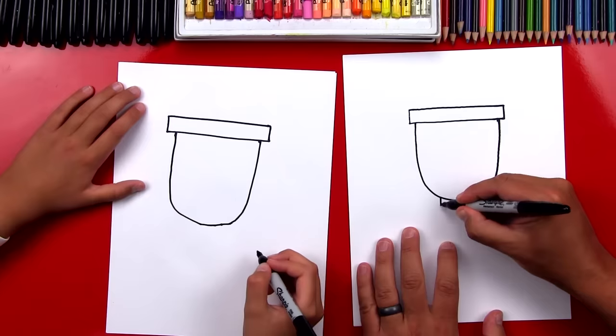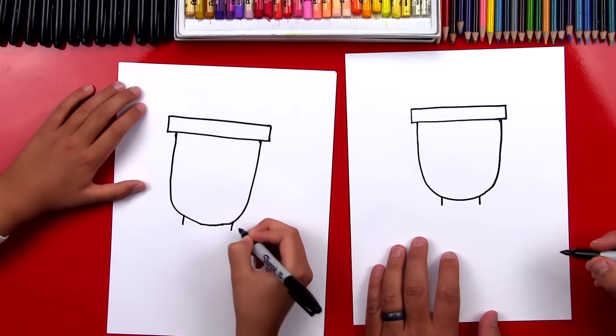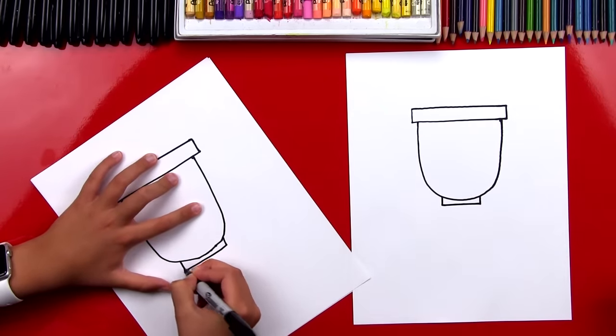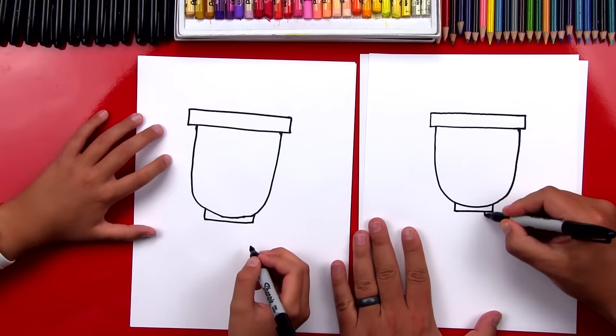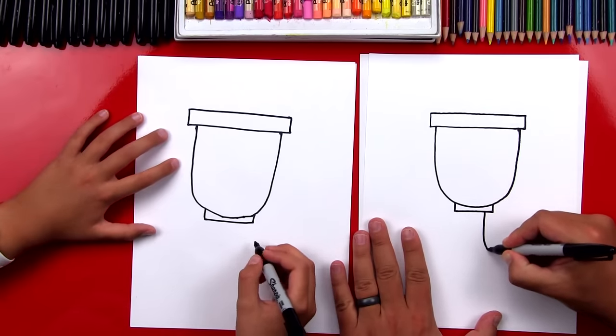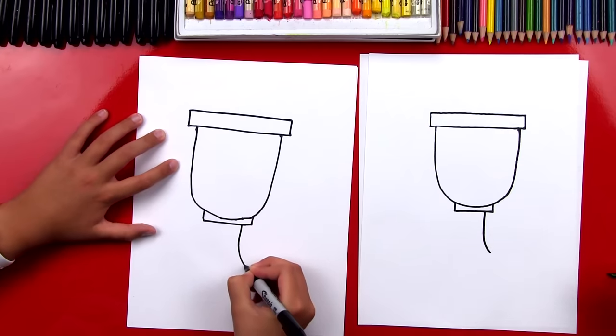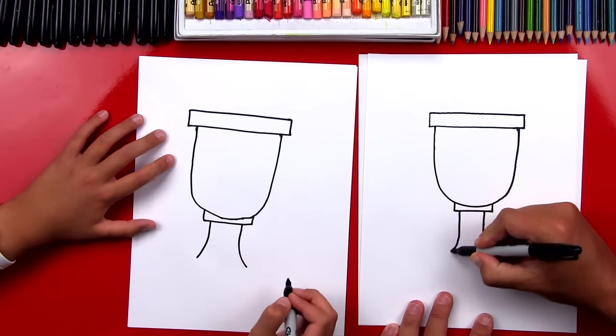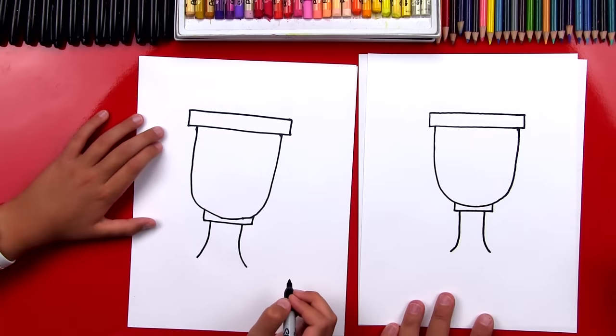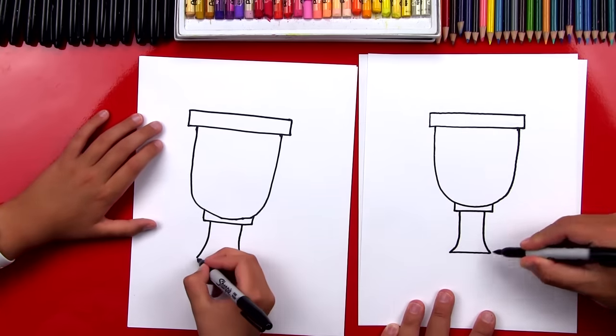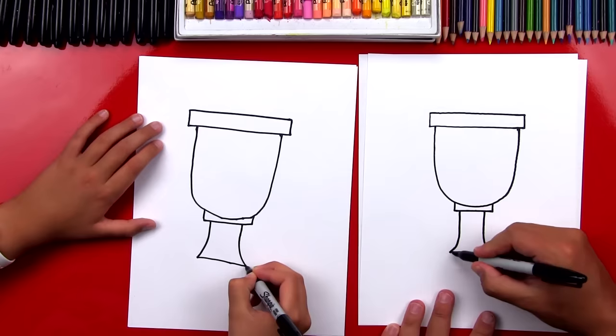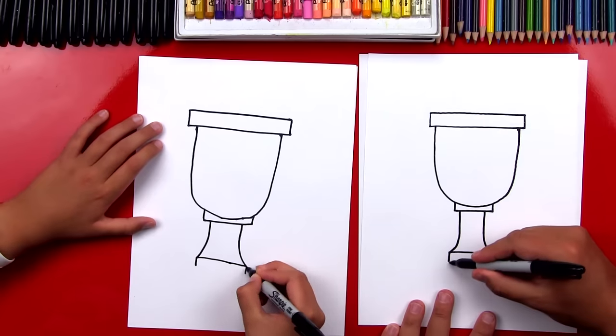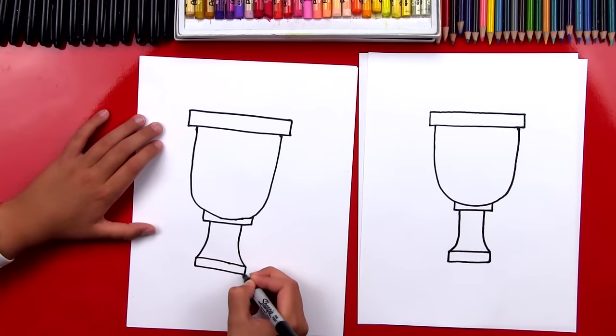Now we're gonna draw another rectangle, drawing the base of our trophy. Draw two lines down here. Now we're gonna draw the rest of the base, a line that comes down like this and then curves out at the bottom. Then draw that same line over here. Straight line down and then curve out at the bottom. Now let's draw another rectangle to connect. Connect to the bottom and then draw two lines down. Two short lines and then connect it. There's another rectangle.